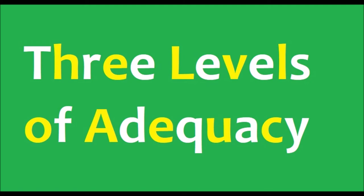3. Explanatory adequacy. A theory that explains a child's acquisition of a language and at the same time accounts for the data and native speaker's judgment is an explanatory adequate theory. Chomsky's theories were all intended to form a rational explanation for language acquisition and hence fall into this category.